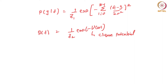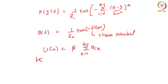One potential often used is U(ω) = beta times the sum from k=0 to K-1 of U(ik), where K is the number of cliques. U(ik) is the number of pixels in clique k which has the same intensity as the center pixel i.